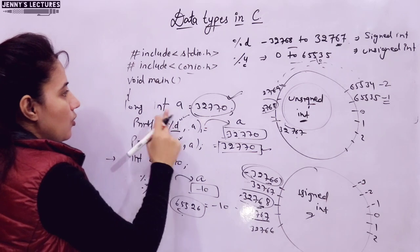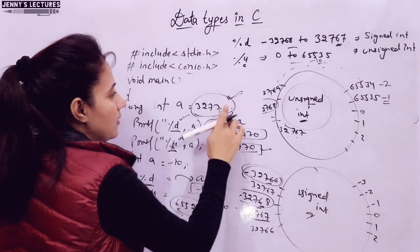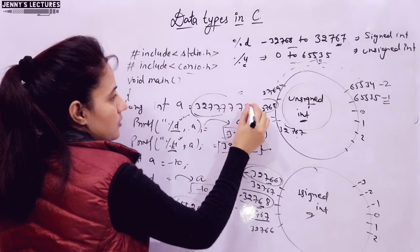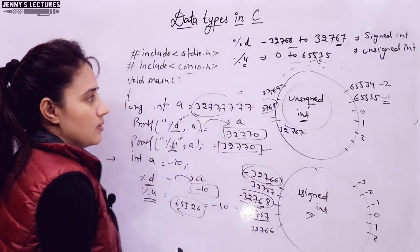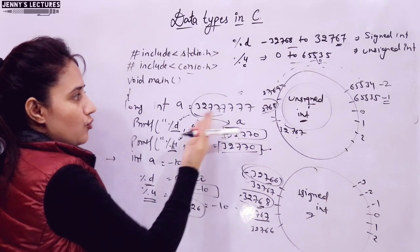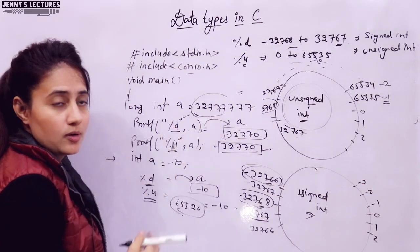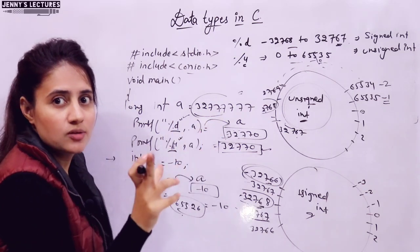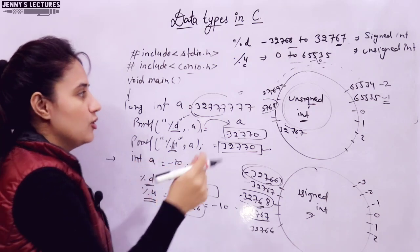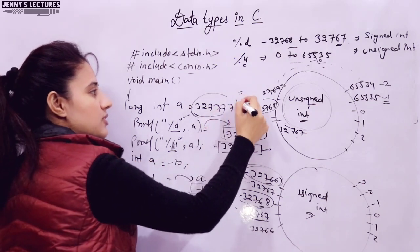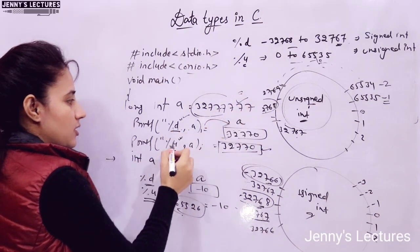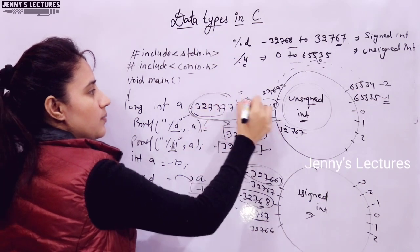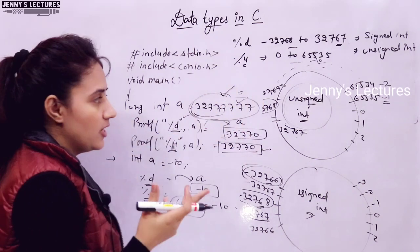In long int, if you store 7777, this number is within the long int range. So the same output 7777 is printed regardless of whether you use %d or %u, because the number is stored accurately.